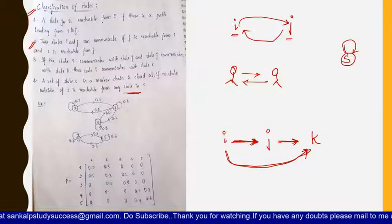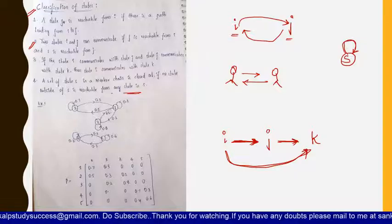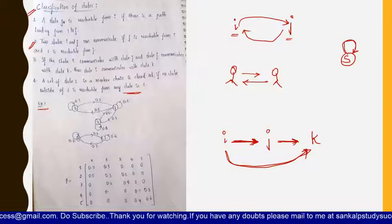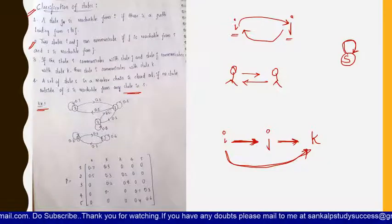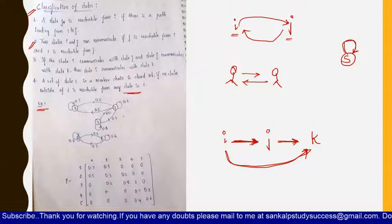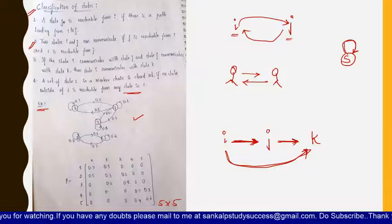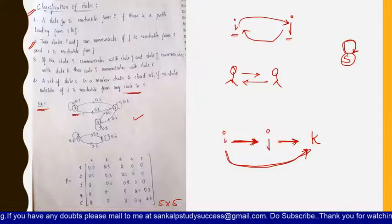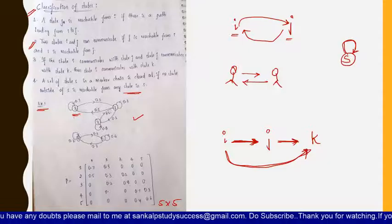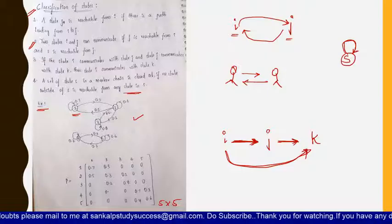That means you are going from S to S only — you are having a self loop on S. Now if you consider this example, there are five states numbered one to five. If you draw the transition probability matrix for this transition diagram, you will get a five-by-five matrix. For state one, there is a transition from one to one itself with a value of 0.7.